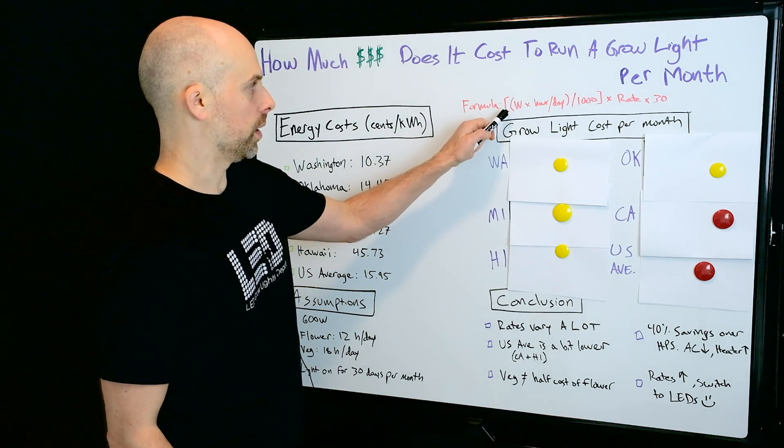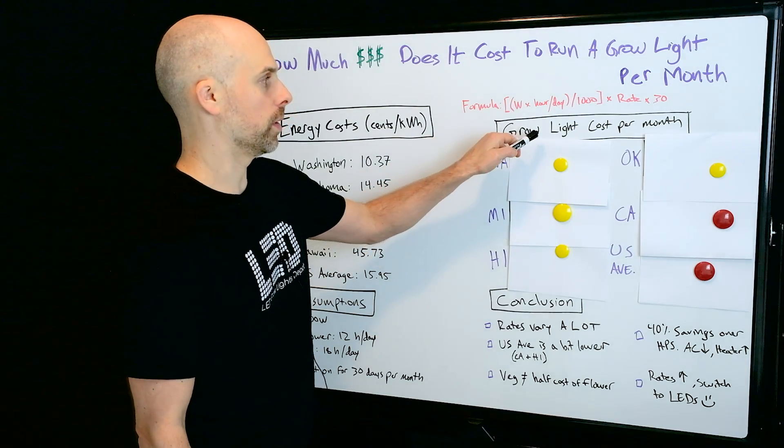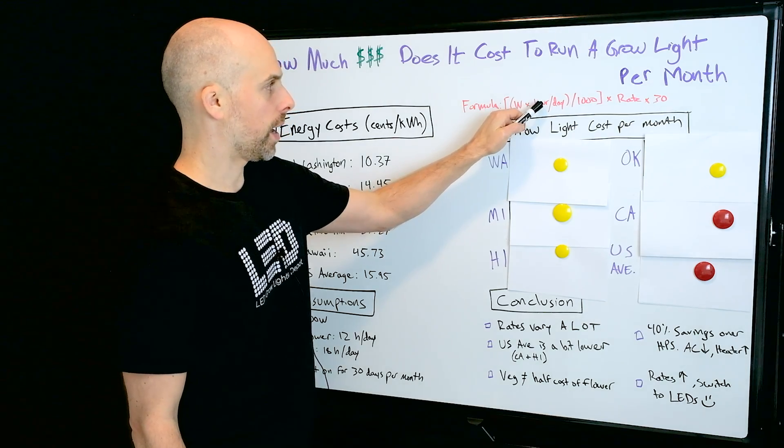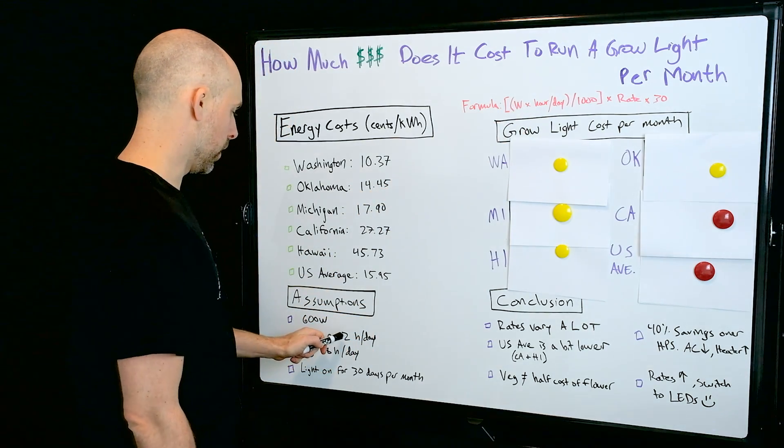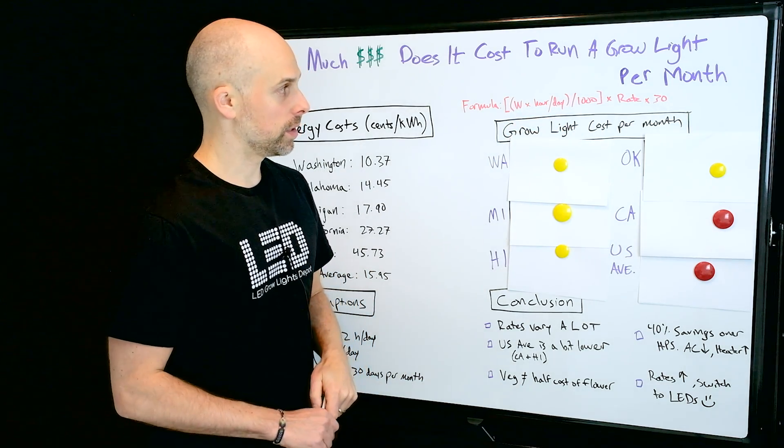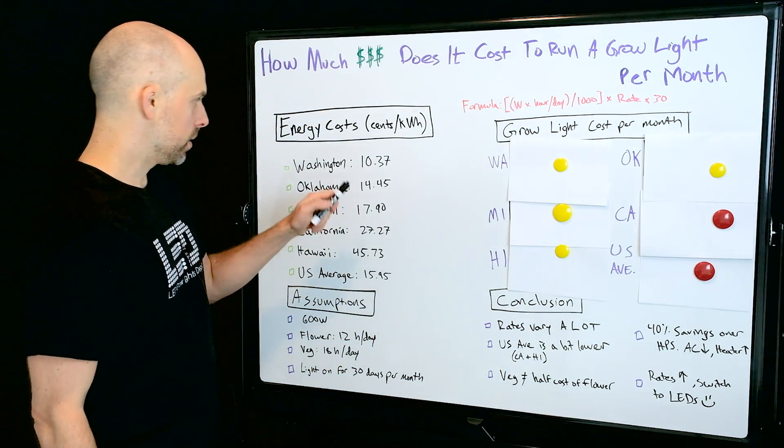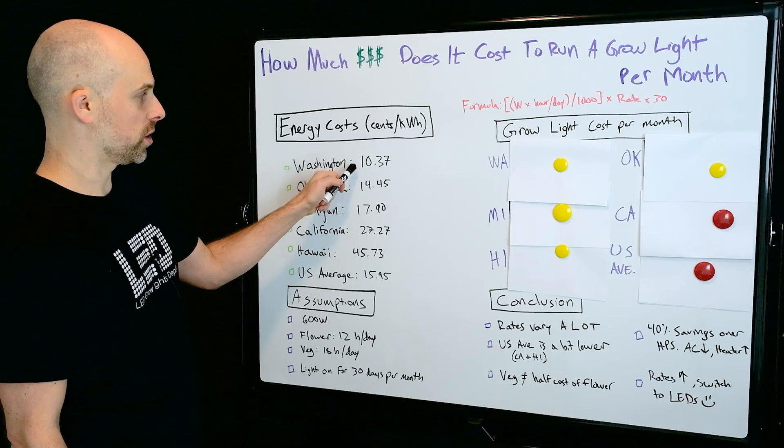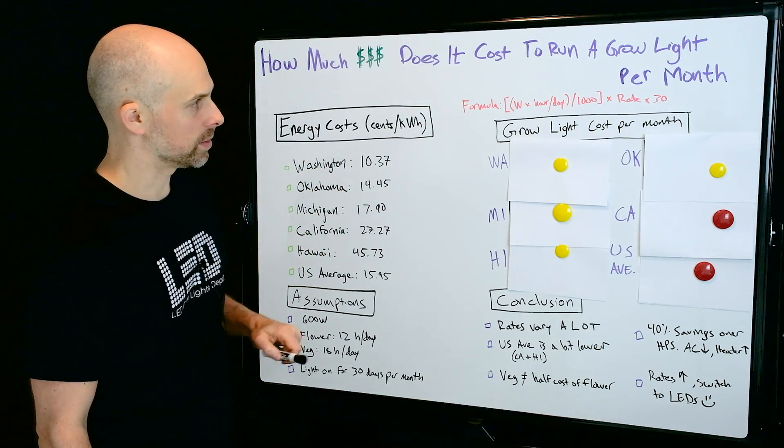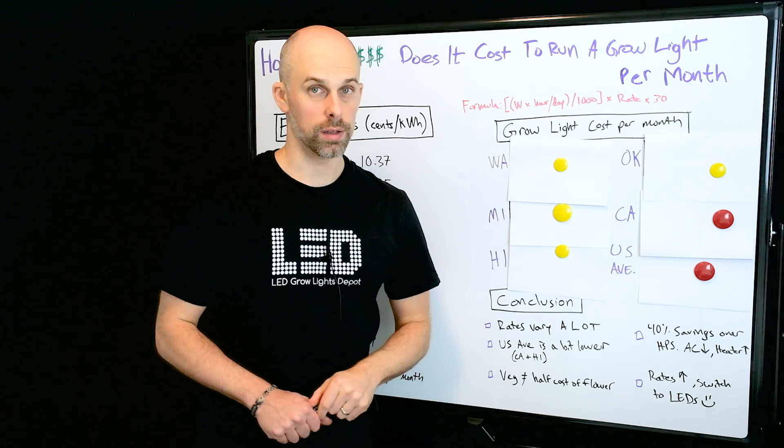So let me slow that down just a bit. The formula for grow light cost per month equals 600 watts times hours per day, which is either going to be 12 or 18. I'm going to divide that by 1000, multiply it by the rate, in this case say Washington 0.1037, and multiply it by 30 for 30 days.